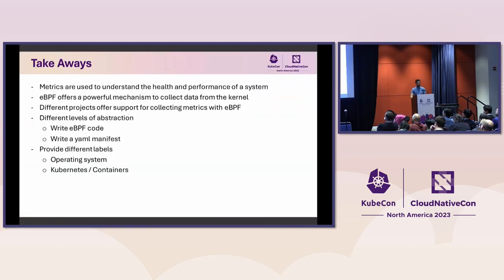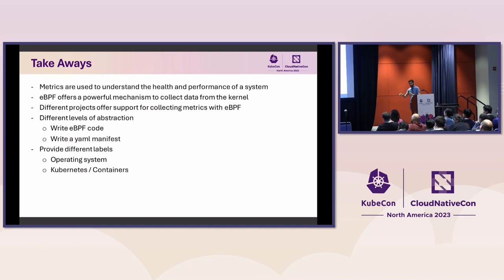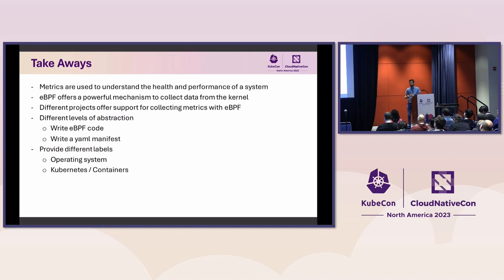I think this is the most important slide of the presentation. The key takeaways are: metrics are used to understand the health and performance of our system; eBPF is a really powerful mechanism to collect data from the kernel; and there are different projects that provide metrics based on eBPF. Depending on the abstraction level you want, you can choose one or another — maybe you want to write your own BPF code, or maybe you only want to configure a YAML manifest. Also, if you only need OS-level labels use BPF Exporter; if you need Kubernetes information use Tetragon or Inspector Gadget.